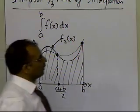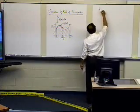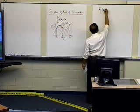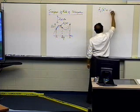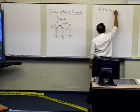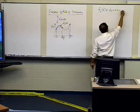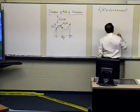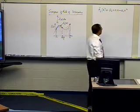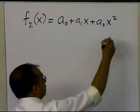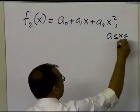We are trying to find this second-order polynomial, which I call f₂(x), expressed as a₀ + a₁x + a₂x². That's the general form of a second-order polynomial, and it is valid between a and b.